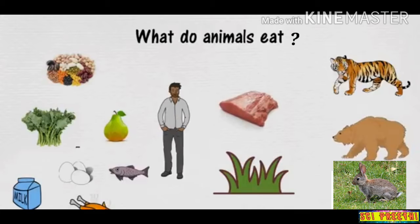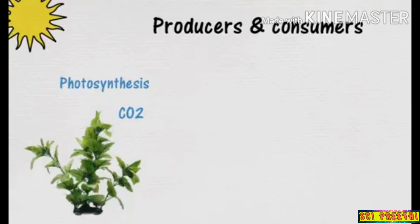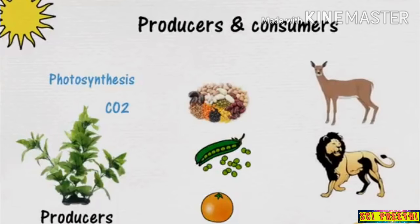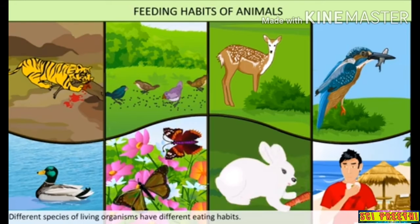Next we will see producers and consumers. Plants do not eat food like animals — the green plants can make their own food by the process of photosynthesis in the presence of sunlight and carbon dioxide. Since plants can make their own food, they are called producers. Plants also provide food for animals and human beings. Animals cannot make their own food and depend on plants or other animals, so they are called consumers.